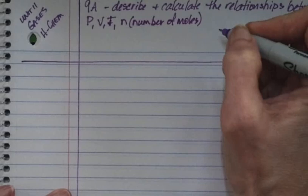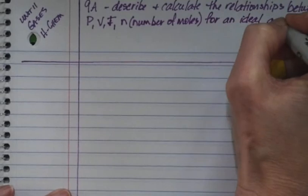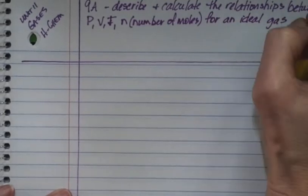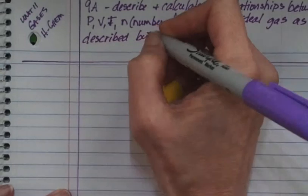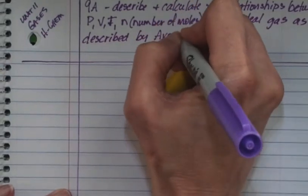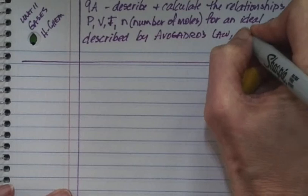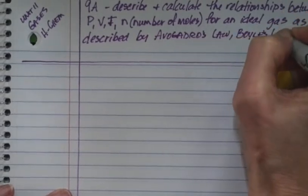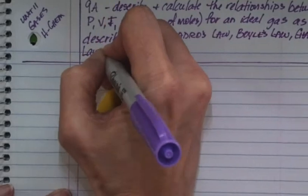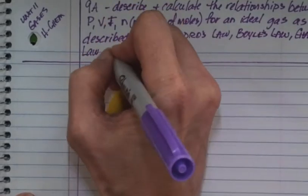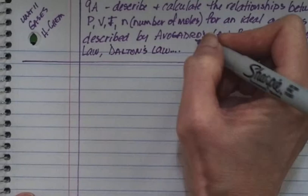For an ideal gas, as described by Avogadro's law — I'm going to put these in alphabetical order: A, B, C, D — Boyle's law, Charles' law, Dalton's law — it's actually Dalton's law of partial pressure — and the ideal gas law.